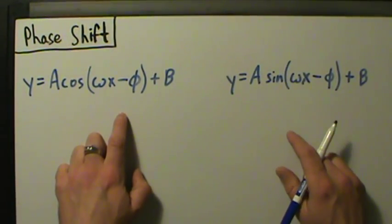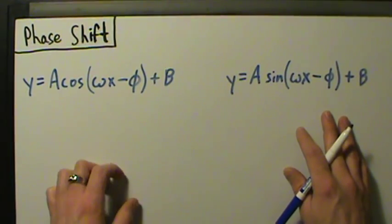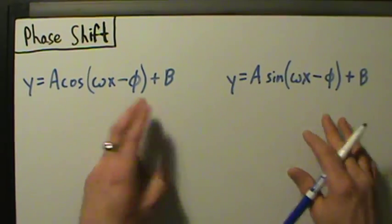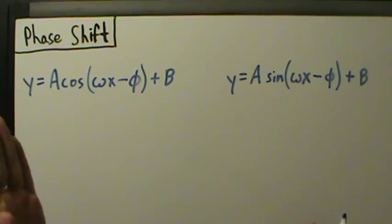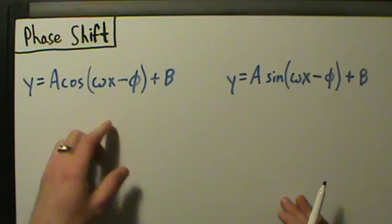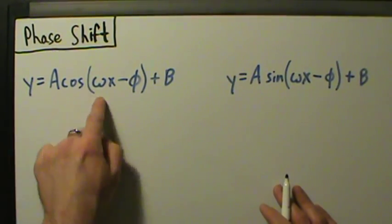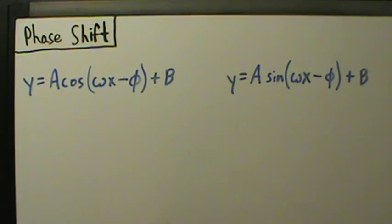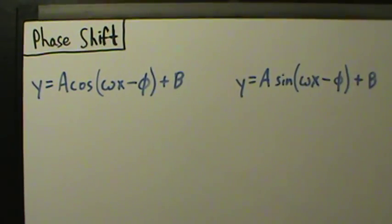If you're following along in a course, you might be using different letters — like A, B, C, D instead of A, omega, phi, and B, or all Greek letters like alpha and beta. It absolutely does not matter what you call these things. You can call them anything you want. The math, concepts, and underlying truths are all the same — we're just giving them names.